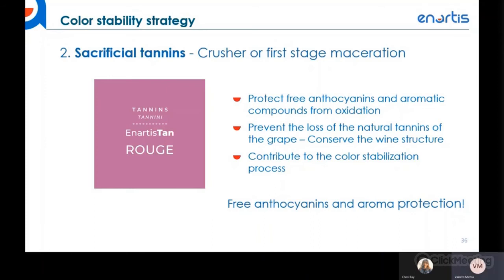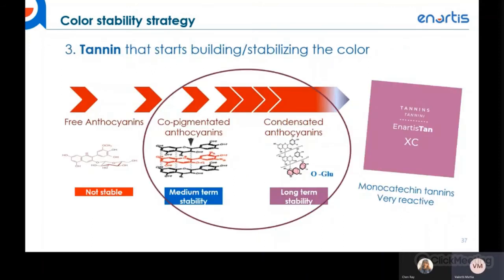Once color is protected with exogenous sacrificial tannins, the next step is to fix the tannins — specifically recommending addition of pure monocatechin condensed tannins: An Artis TannXe. This is a very reactive tannin that can be added right from the beginning without alcohol present, helping speed up co-pigmentation in the first one or two days. Then, as alcohol develops in the must, more acetaldehyde becomes available, initiating the condensation process with ethanol bridges between anthocyanins and tannins — stabilizing color long-term.